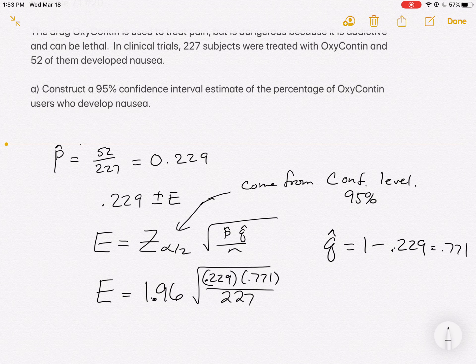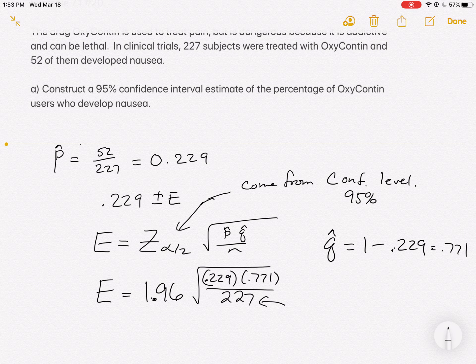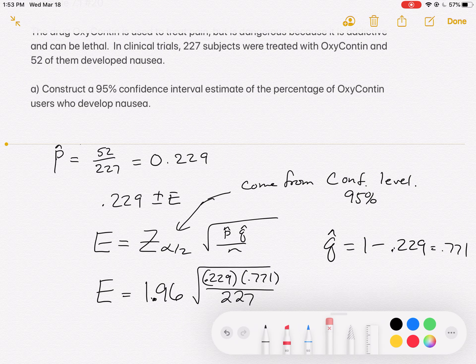So notice that as our sample size increases, as this 227 number gets bigger, that our error would drop. That's exactly what we expected would happen. But it's not going to get bigger for us. It is what it is. So let's go answer this question.